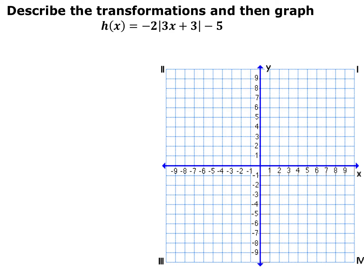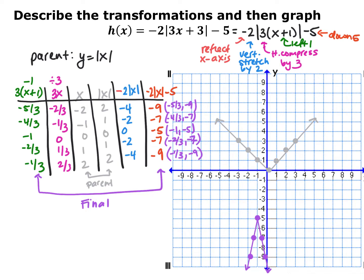Now we have h(x) = −2|3x + 3| − 5. The parent function is the absolute value of x. Before reading transformations, I factor out the 3 multiplied by x, giving −2|3(x + 1)| − 5. The negative in front reflects across the x-axis. The 2 in front vertically stretches by 2. The 3 multiplied by x horizontally compresses by 3. The x plus 1 shifts left 1, and the minus 5 shifts down 5.